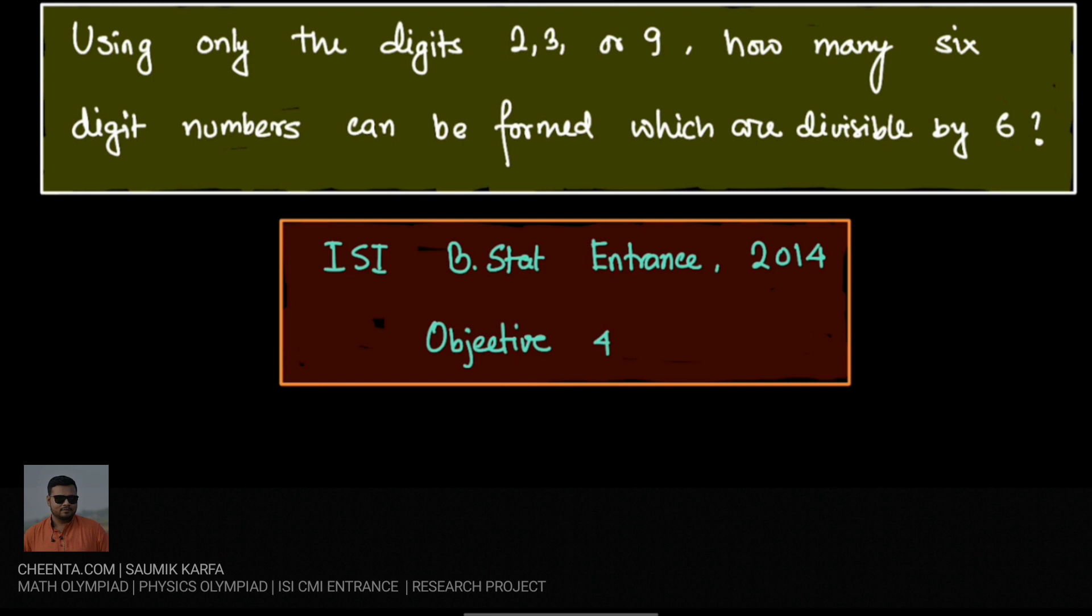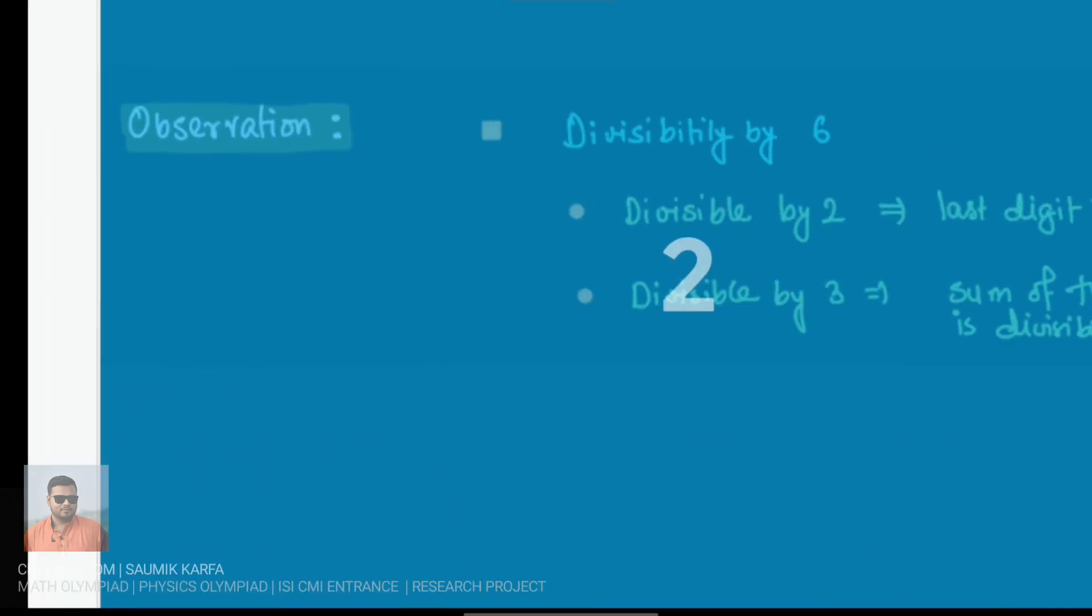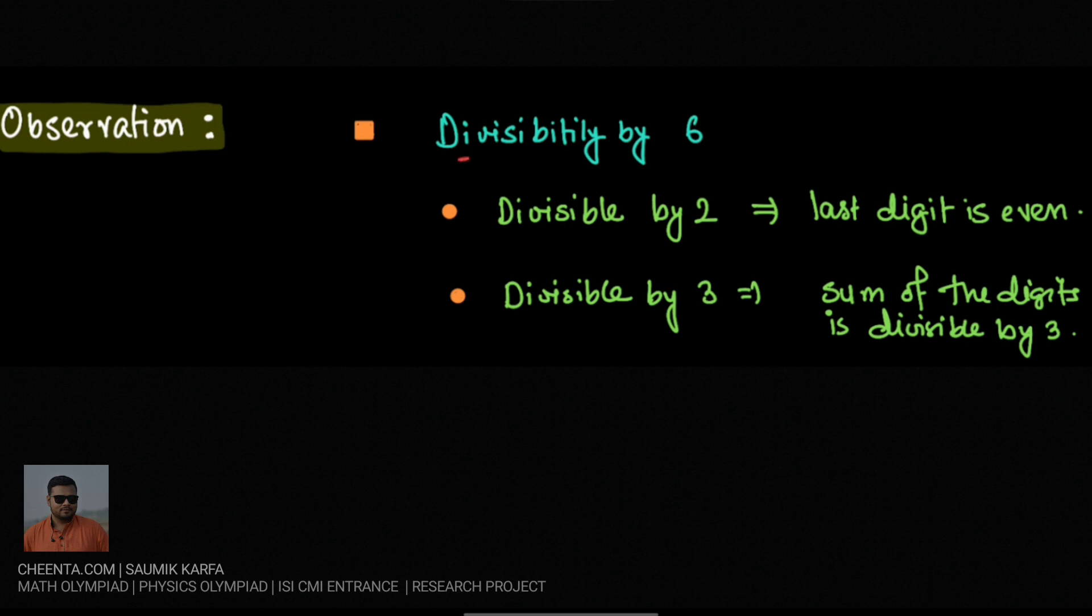Let us start this problem by making some observations. We can see divisibility by 6 - the numbers we need to make should be divisible by 6. So as 6 is 2 times 3, we know the number should be divisible by 2 as well as divisible by 3.